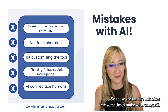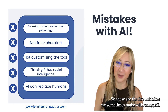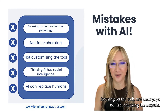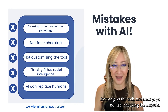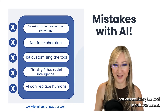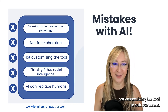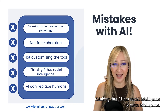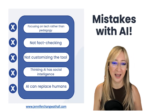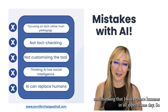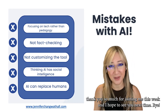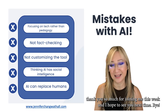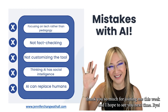So these are the five mistakes we sometimes make with AI: focusing on the tech rather than pedagogy, not fact-checking outputs, not customizing the tool to suit our needs, thinking AI has social or meta intelligence, and thinking AI will replace humans in all aspects. Thank you so much for joining me this week — I hope to see you next time. Bye!